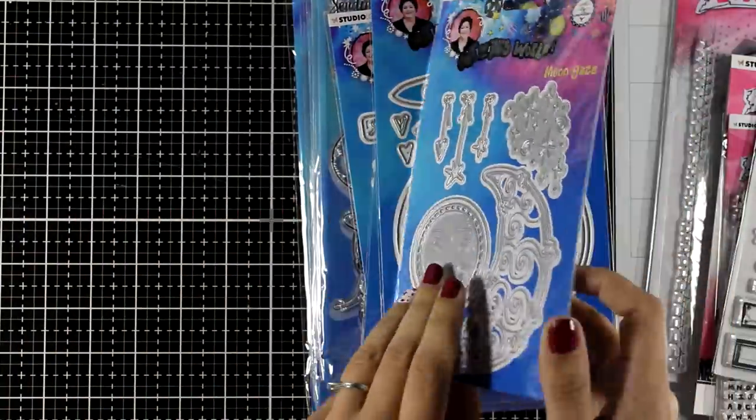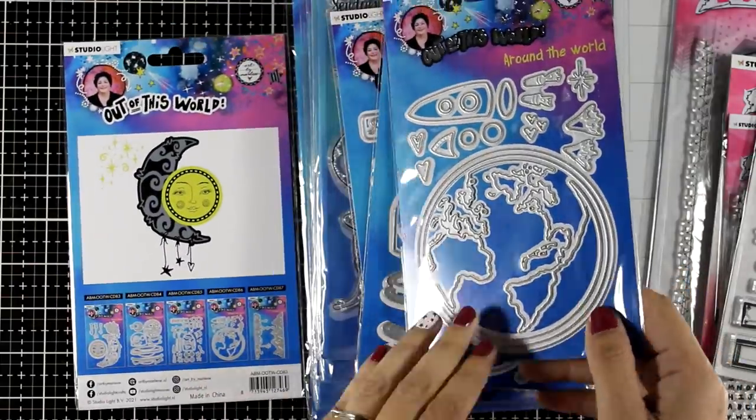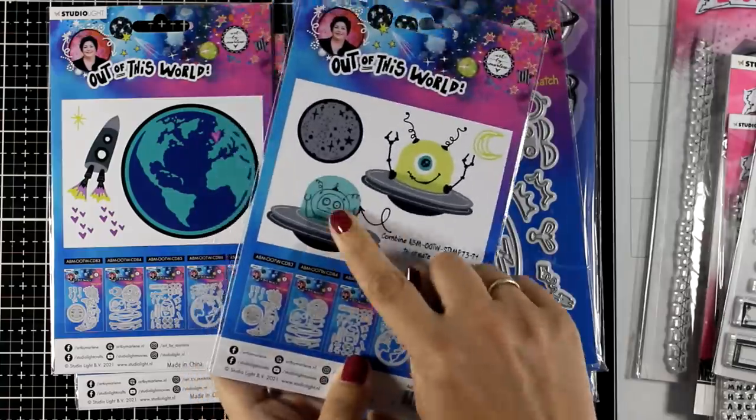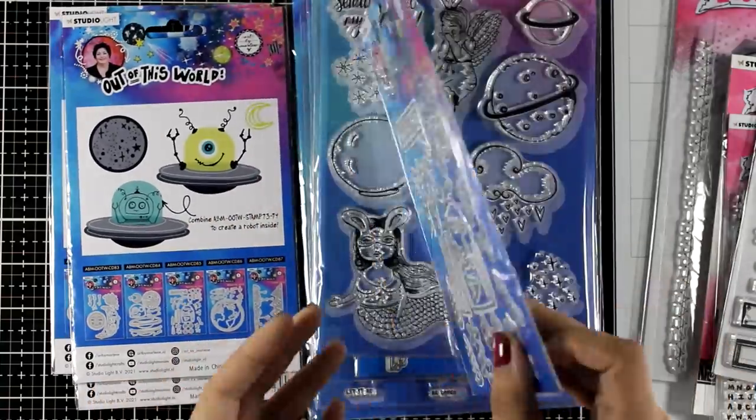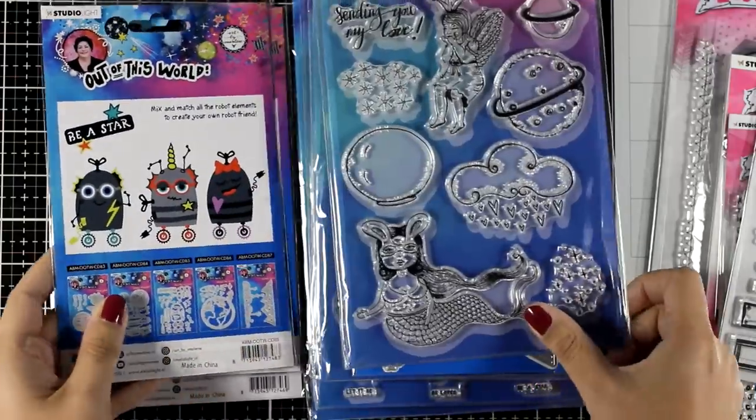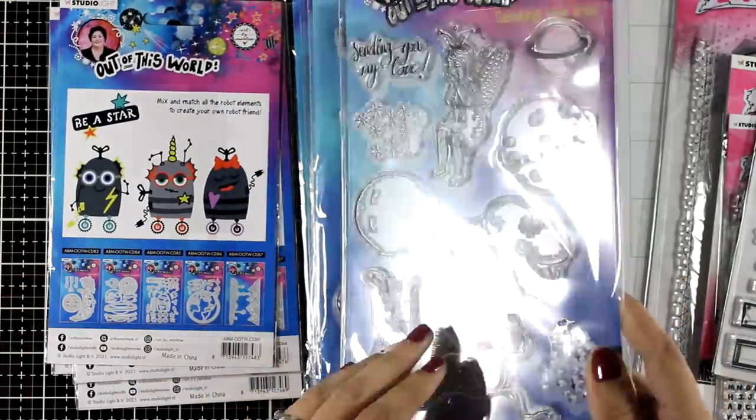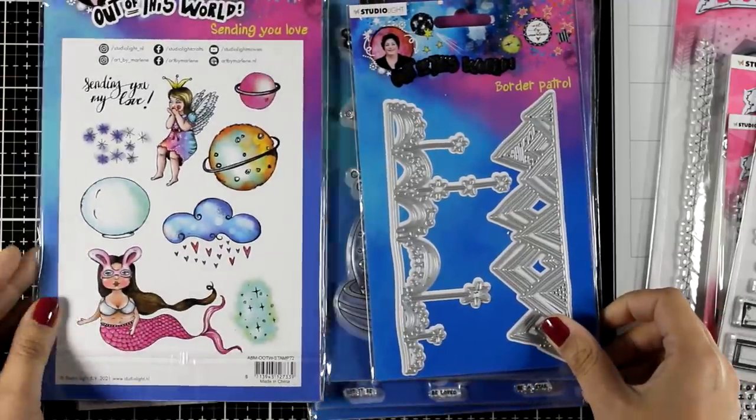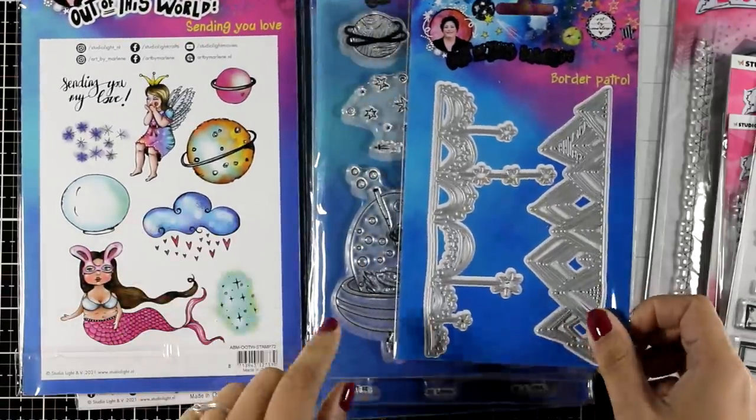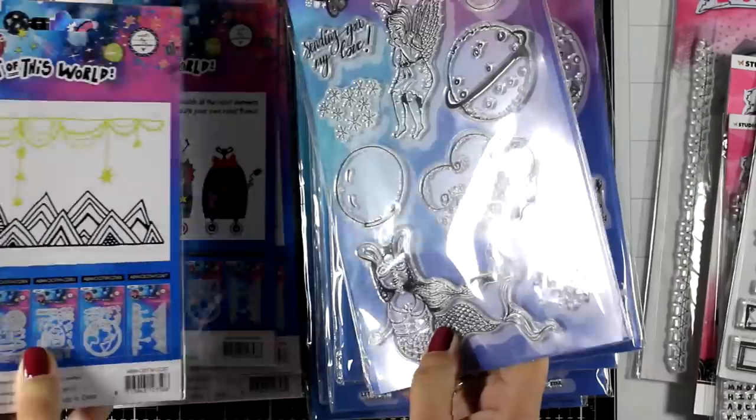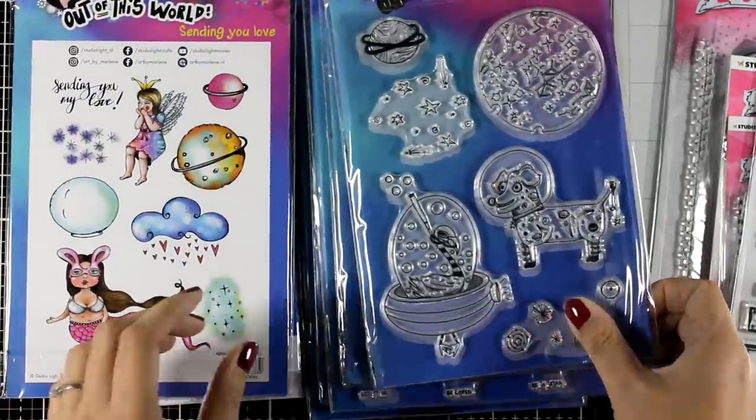The release is called Out of This World and it's all about space. You will find moon, stars, planets, aliens, UFOs, you will find fun robots that you can build up. There are stamps with Marlene's unique designs and their sizes are great not only for art journaling but also for card making.